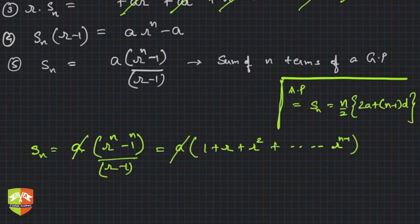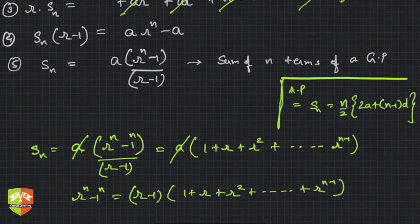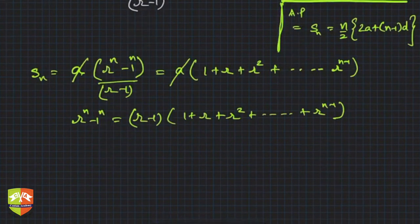r^n - 1 is equal to (r-1) times (1 + r + r² + ...). Do you see something here?